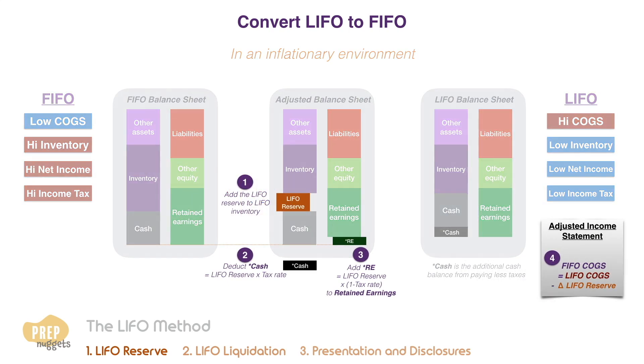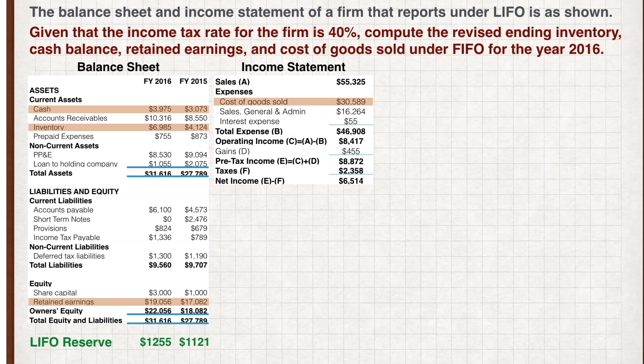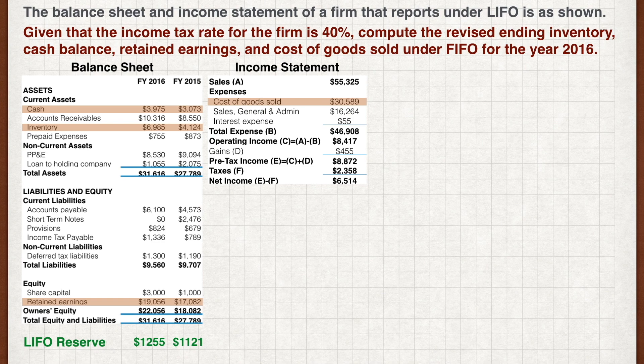These are the four steps to convert a LIFO-based statement to a FIFO-based statement. Make sure you remember these as we go through the following example. The balance sheet and income statement of a firm that reports under LIFO is as shown. Given that the income tax rate for the firm is 40%, compute the revised ending inventory, cash balance, retained earnings, and cost of goods sold under FIFO for the year 2016.